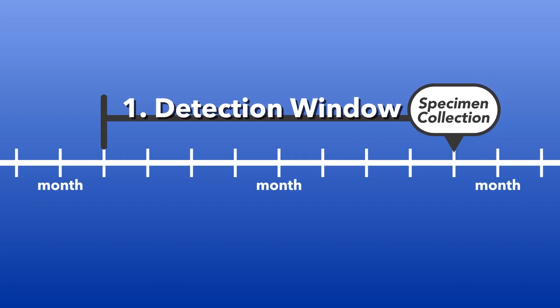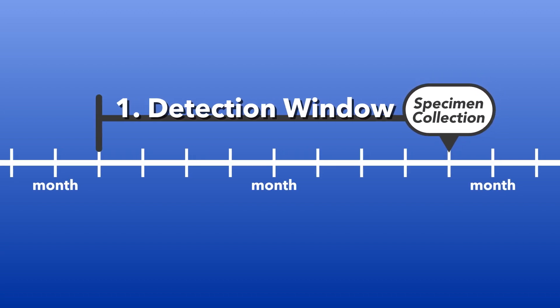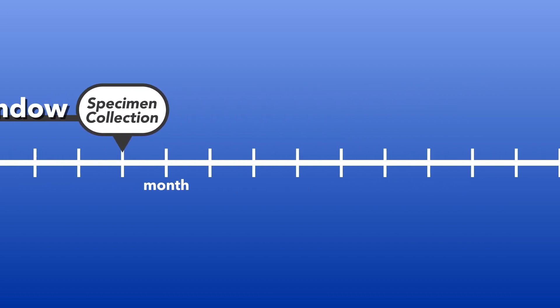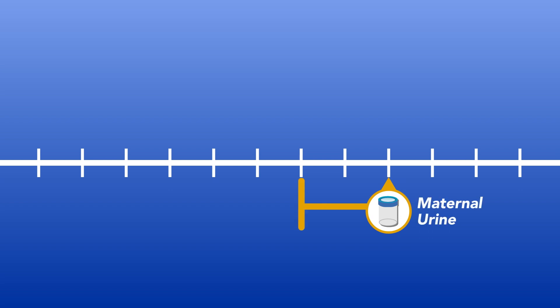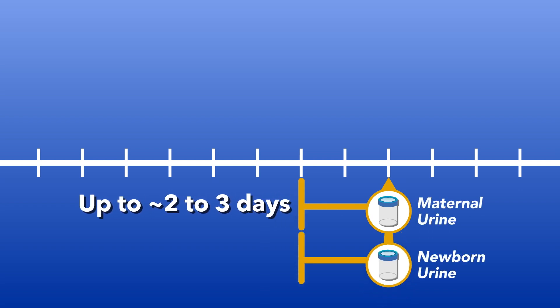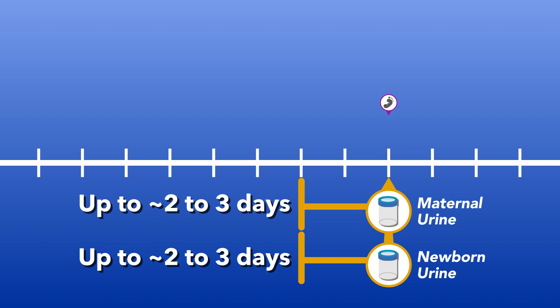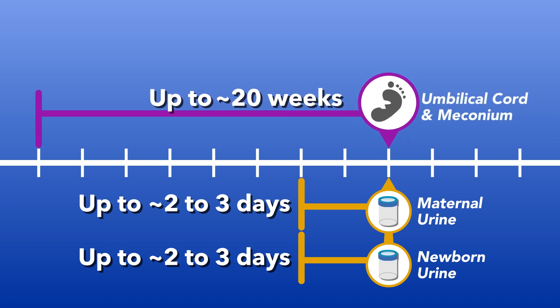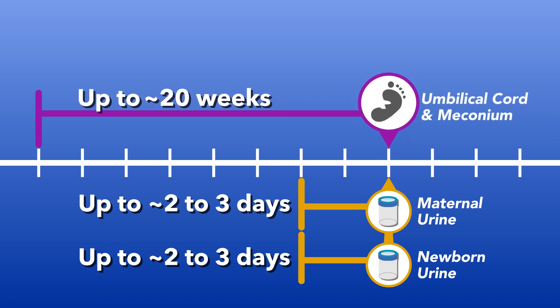Detection window. The detection window of substances in umbilical cord tissue and meconium is unmatched when it comes to prenatal exposure testing. Alcohol and other drugs can be detected for up to approximately the last 20 weeks of gestation.